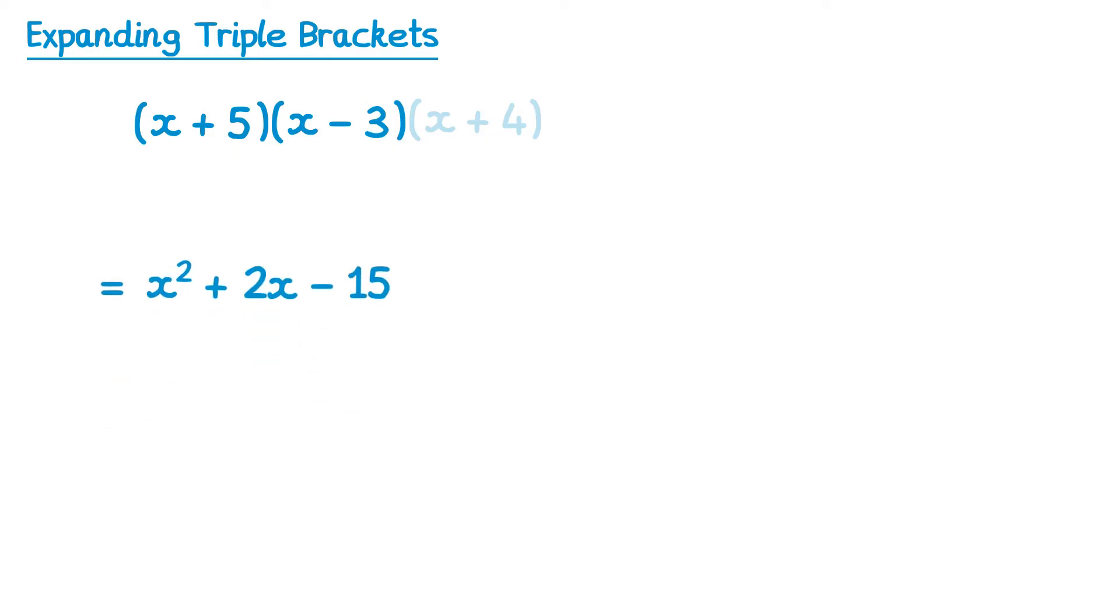Now it turns out that because this quadratic is equal to the two brackets above it, we can just replace it. So this part here is equal to this part here. All we need to do now is introduce our final bracket again, the x plus 4, and write that next to it.